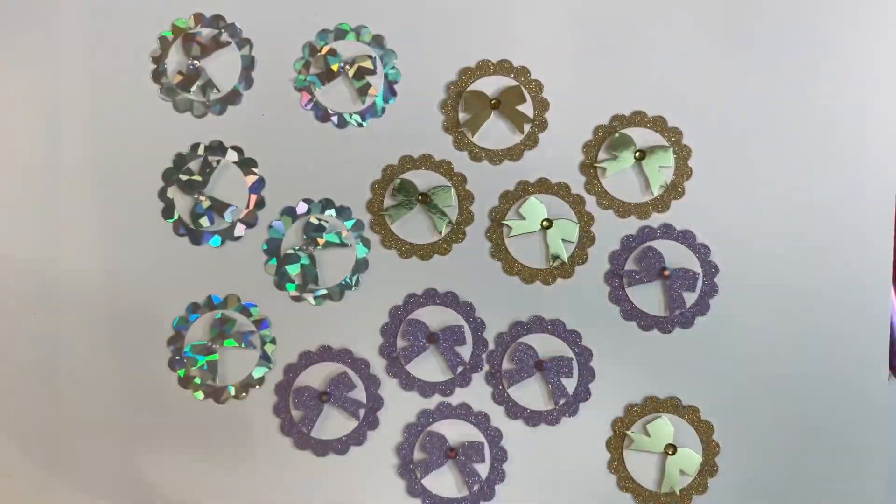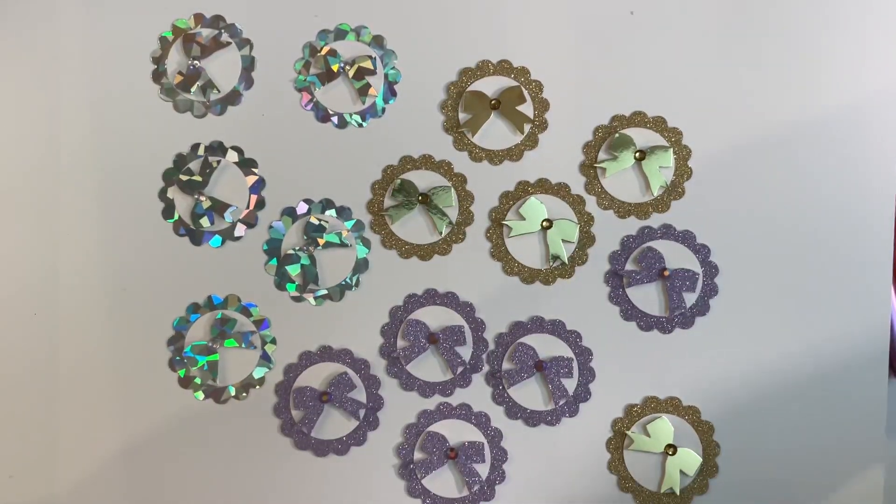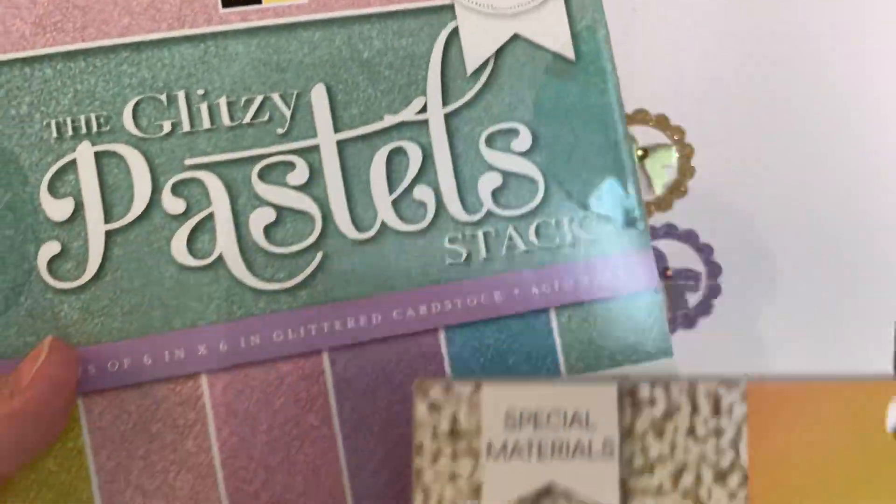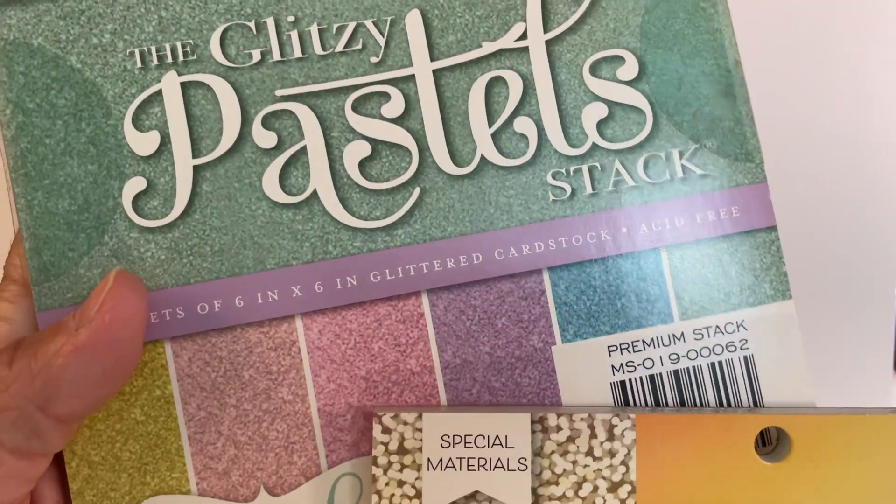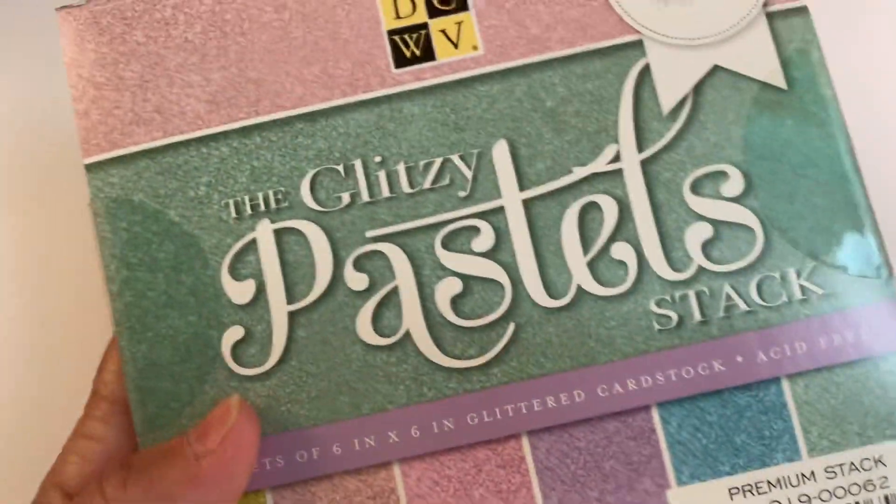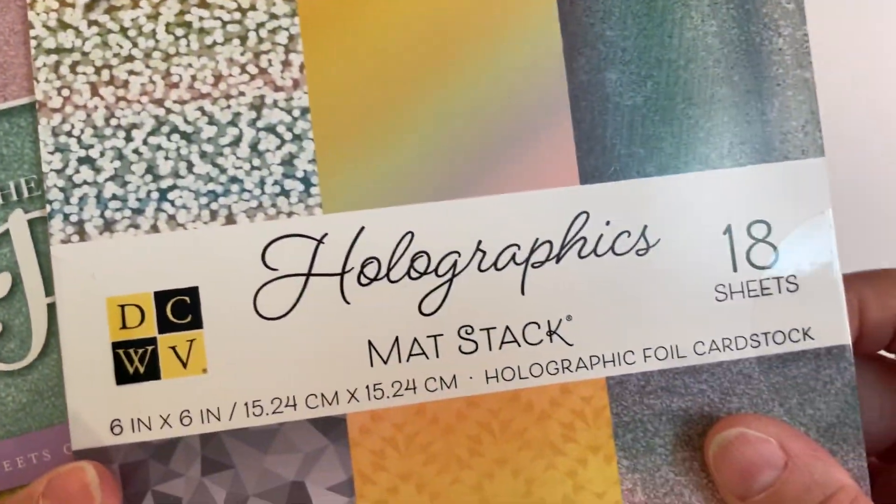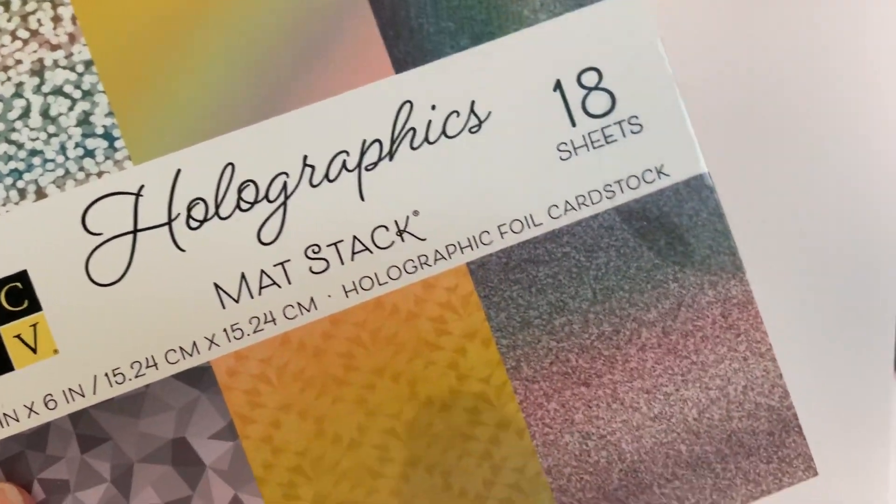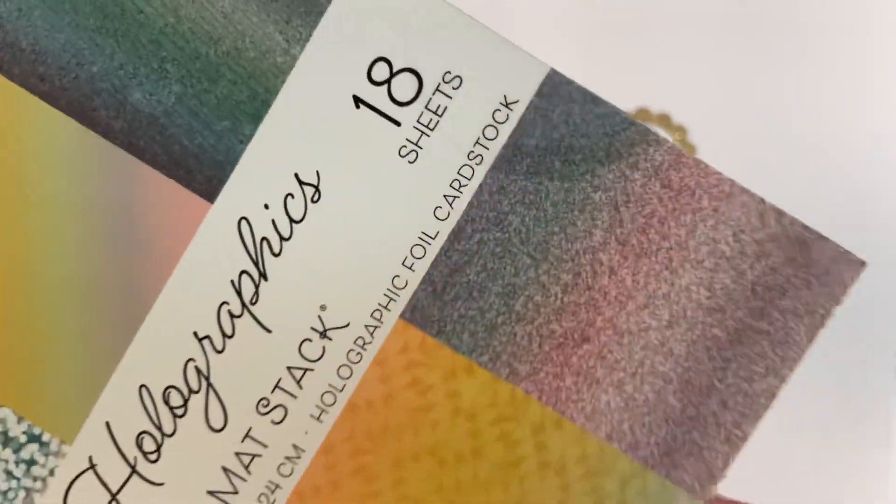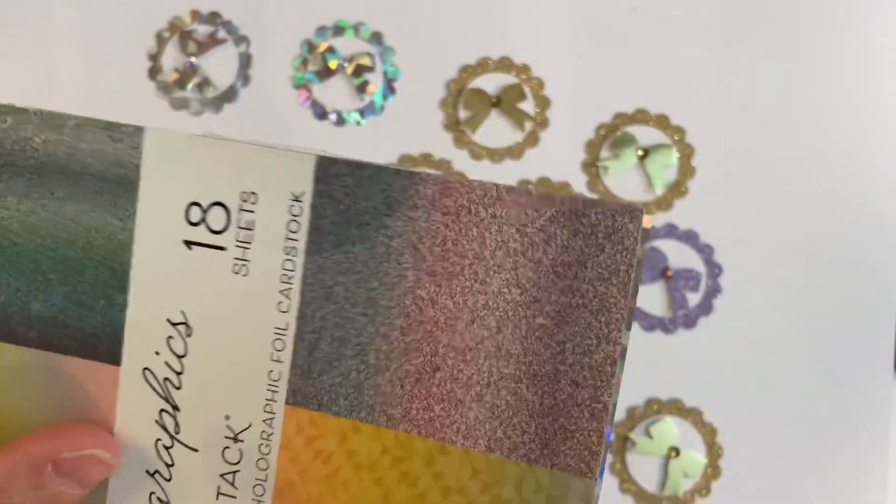These papers are from Cuts with a View. The purple pastel was from a glitzy pastel pack, and then the other is called Holographics, which has different pieces of holographic paper in different patterns, which is pretty cool.